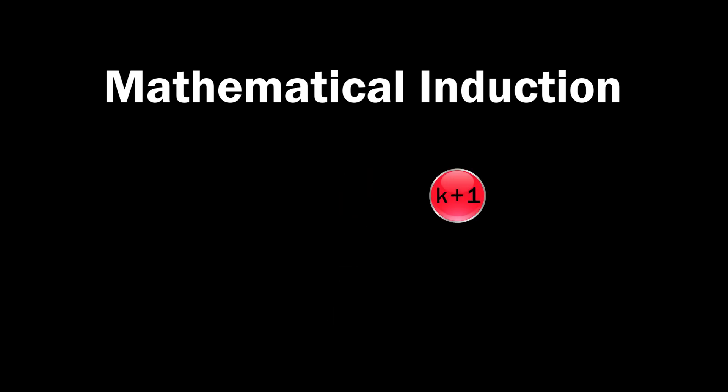Number four, when the kth domino block pk falls, we have to ensure that the very next block pk plus 1 also falls. For simplicity, we'll refer to this as k plus 1.